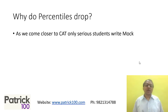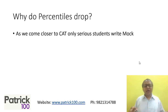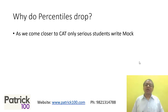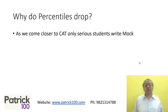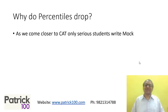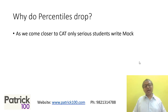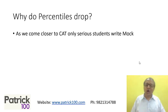So why do percentiles drop? One reason is that when you come closer to the CAT, the later mocks are only written by serious students — people who are really serious about CAT write more mocks. People scoring higher percentiles tend to write more mocks, while people scoring lower percentiles or who have given up on CAT don't write mocks. So automatically, the people writing mocks now are only serious candidates, meaning you're competing with students who are really serious, so your percentiles tend to be on the lower side.